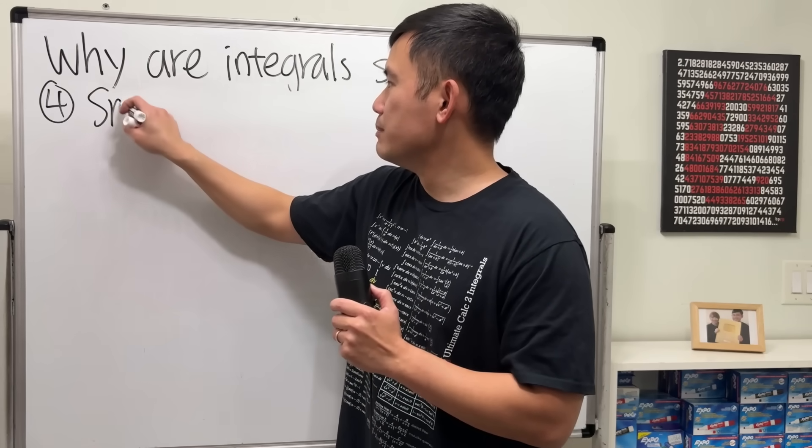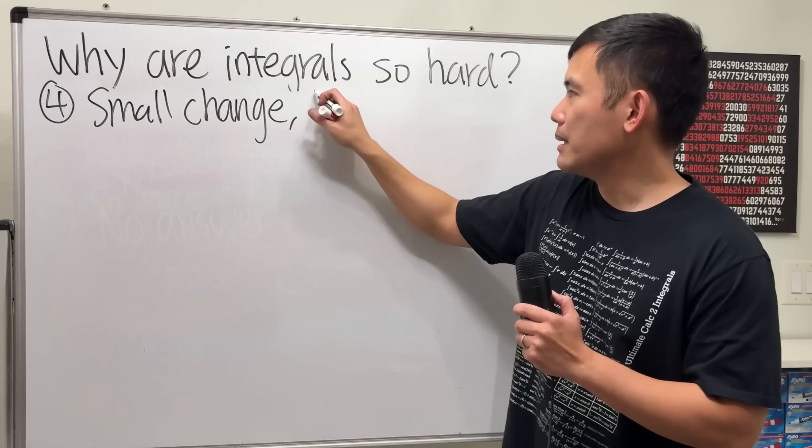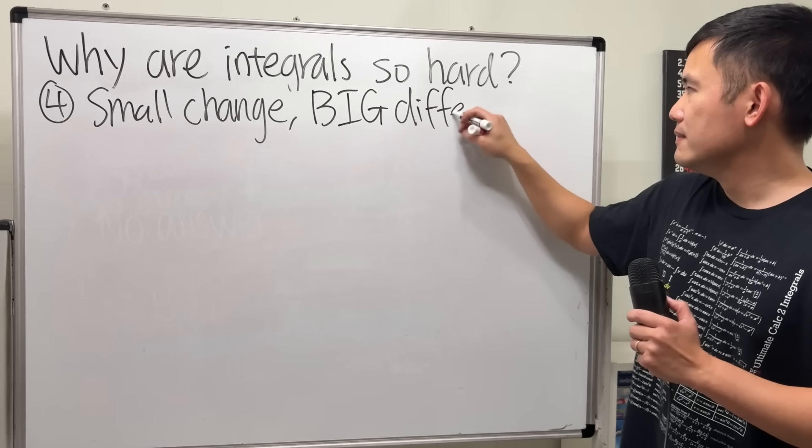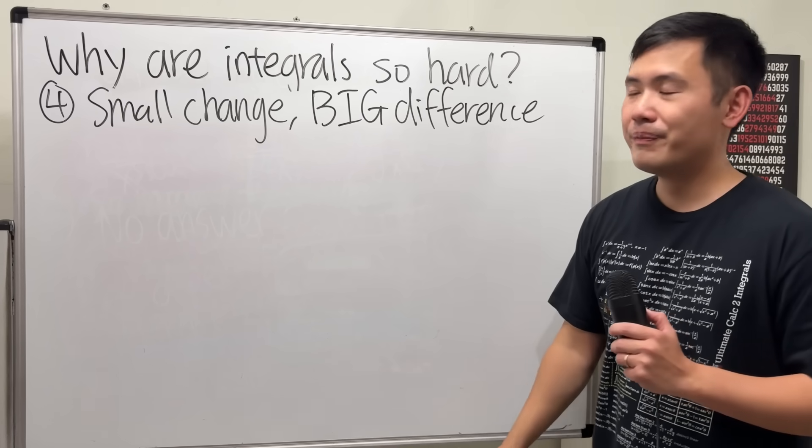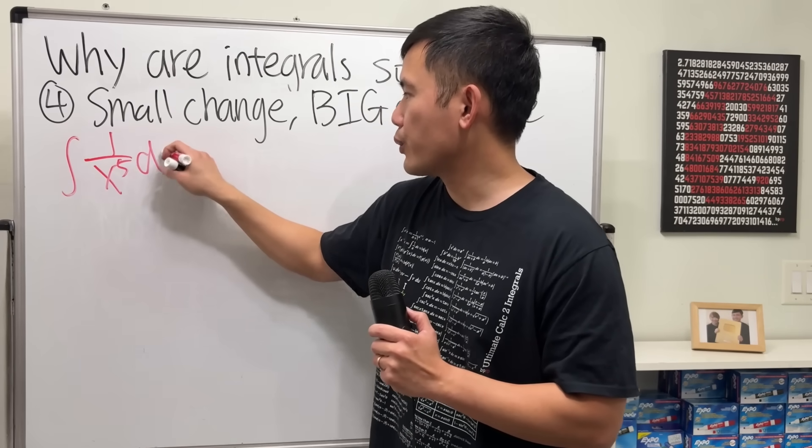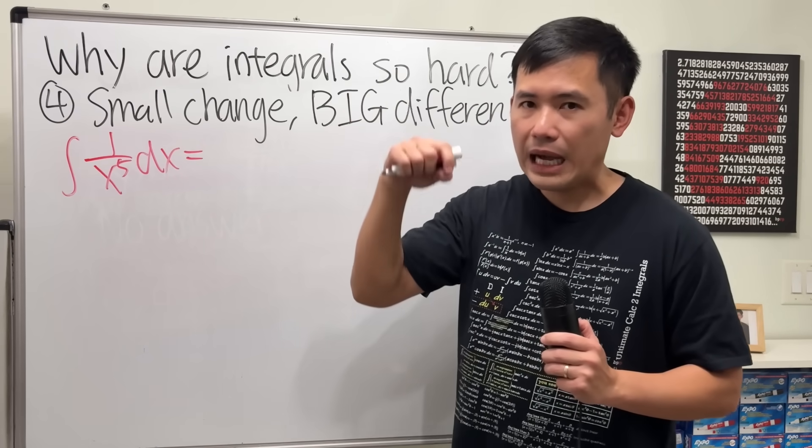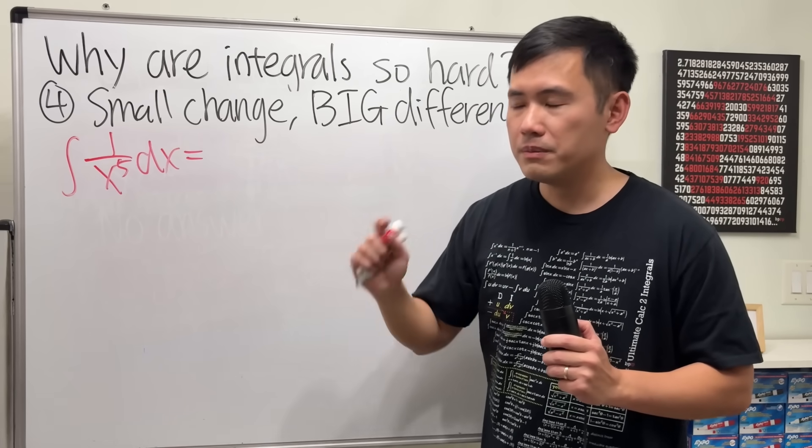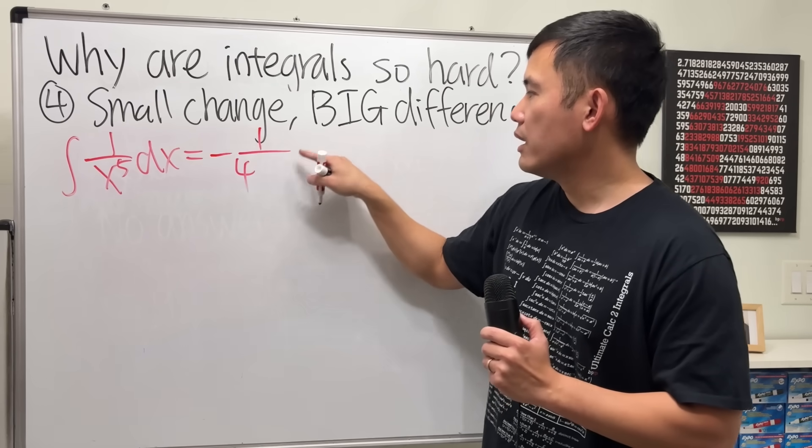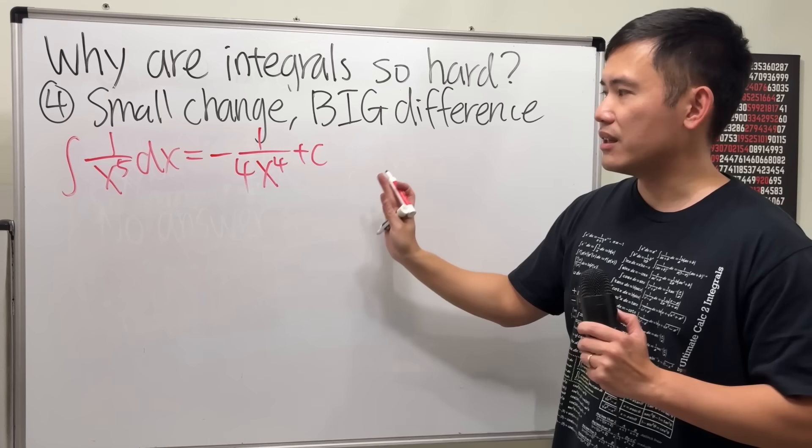And I'm going to give you guys a classic example. Can you guys go ahead and integrate 1 over x to the fifth power for me real quick? Sure thing, right? This is the same as x to the negative 5. Add 1 to the power, we get negative 4. Divided by that. So we get negative 1 over 4, x to the negative 4. Can put that down at the bottom. And that's the answer. Done, Dio.